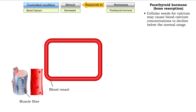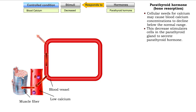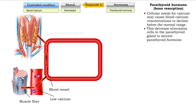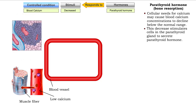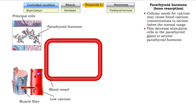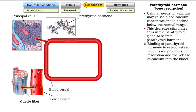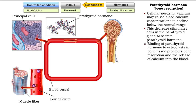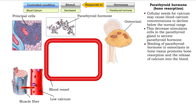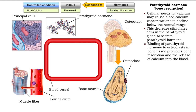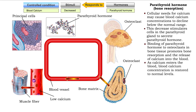Cellular needs for calcium may cause blood calcium concentrations to decline below the normal range. This decrease stimulates the principal cells in the parathyroid gland to secrete parathyroid hormone. Parathyroid hormone binds to osteoclasts in bone tissue, promoting bone resorption and the release of calcium into the blood. As calcium enters the blood, blood calcium concentration is restored to normal levels.